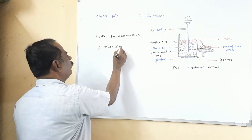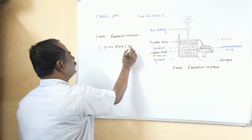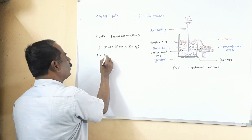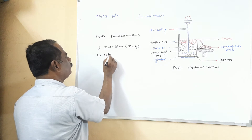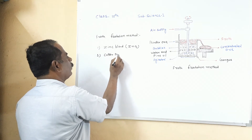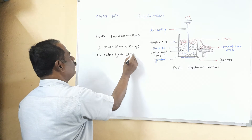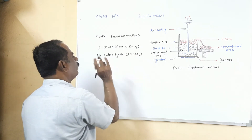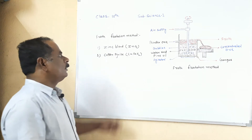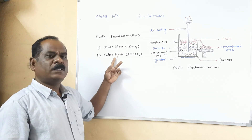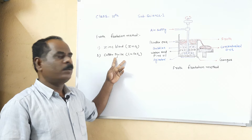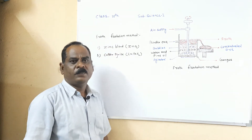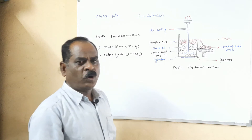Zinc blende ore contains zinc sulphide, with formula ZnS. The second example is copper pyrites ore, with formula CuFeS₂. Copper pyrites is also a sulphide ore. Therefore, these two ores can be concentrated by using the froth flotation method.